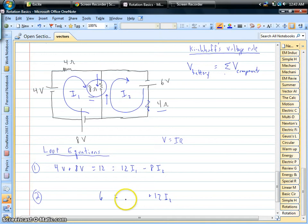Again, you have the currents in opposite directions, so from this perspective, the total current is I₂ minus I₁, so we have to include minus 8 ohms times that I₁ current. So these are our two loop equations.